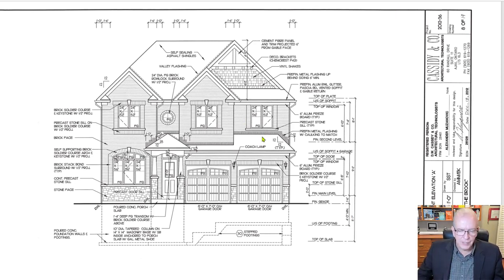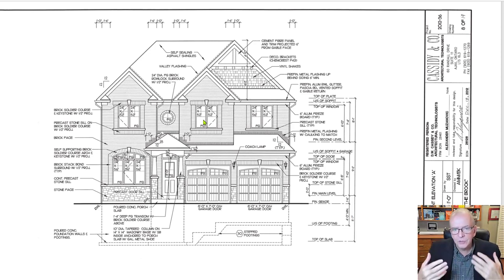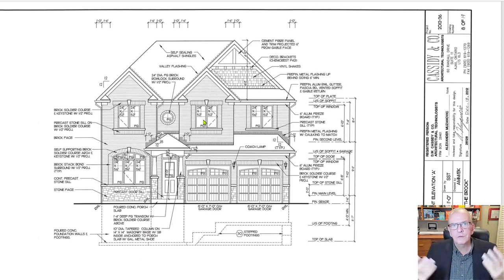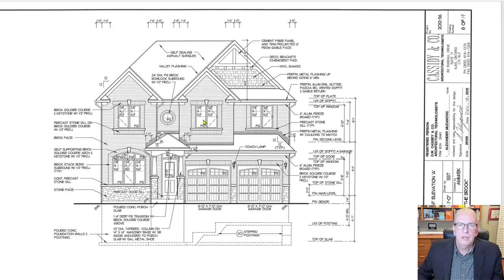We have Front Elevation A for the Brook Drawings. A front elevation is an orthographic drawing — it's flat. You don't really see depth and changes in depth, so you have to get used to switching and looking at different views to fully comprehend what you're looking at. Today we're looking at elevation drawings and we'll look at floor plans. We'll also look at the roof plan today.